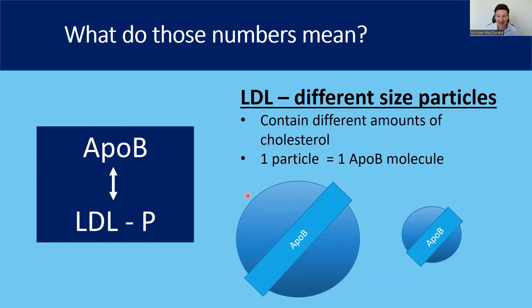However, NMR is a relatively expensive test, it's not commonly done, and you won't find it on a standard lipid panel. ApoB is far easier to find, much cheaper, and it's an excellent surrogate for particle number. The reason is that on every single LDL particle you have one apolipoprotein B molecule — one molecule per particle. So the ApoB number you get is a surrogate for the number of particles. The risk of cardiovascular disease is driven both by particle size and the number or concentration of particles in your bloodstream. So if you have a very high ApoB number, it suggests you've got a very high particle count, and that puts your risk of cardiovascular disease much higher.